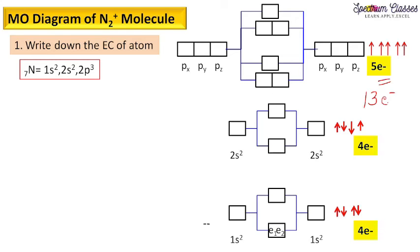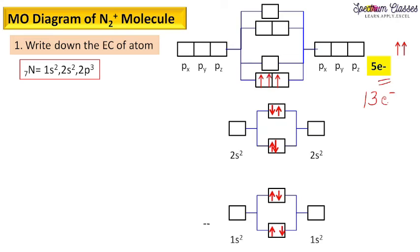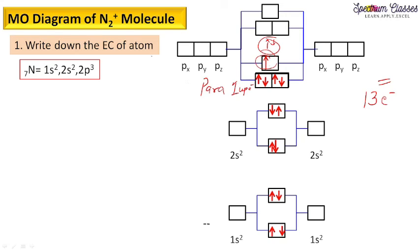We follow the same procedure for filling the electrons. In the previous case of N₂, the sigma orbital was completely filled, making it diamagnetic. But in N₂⁺, there is one unpaired electron, therefore it is paramagnetic. So nitrogen N₂ is diamagnetic and nitrogen N₂⁺ is paramagnetic — that is the key difference.